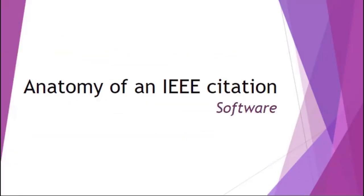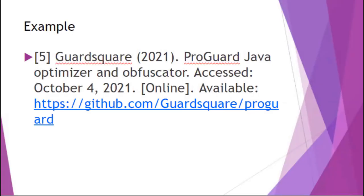The next example is how to cite software, which is a common source used by engineering and computer science students. You will see that it is numbered, and then you have the author's name — or in this case the name of the organization that created the software. Following the author, you have the year of the software, which is especially important because software often gets updated and you need to be using the most current version. Following the year, you have the name of the software, the accessed date, and the word [Online] in brackets. Finally, you have the word 'Available' along with a link to where the reader can find and download the software.